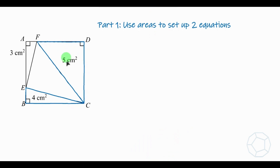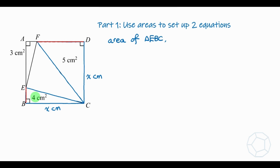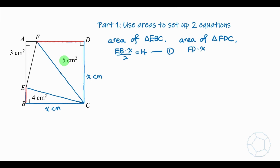In part one, we're going to use the areas of two triangles to set up two equations. Let's focus on the two blue triangles EBC and FDC, in which BC and DC are both side lengths of the square — let them be x cm. Considering the two sides EB and FD highlighted in red: from the area of triangle EBC, base times height over 2 gives EB × x / 2 = 4. We call this equation one.